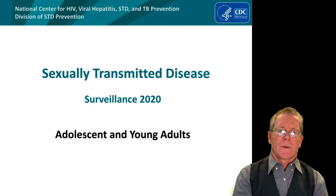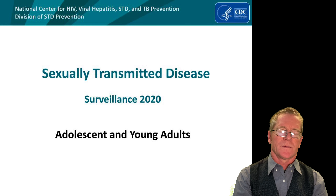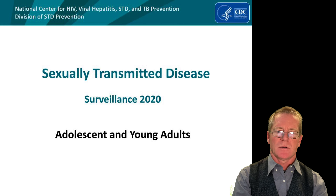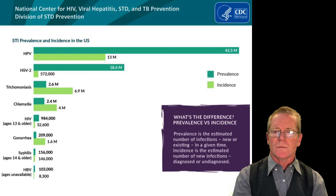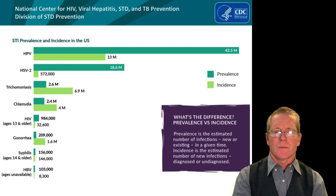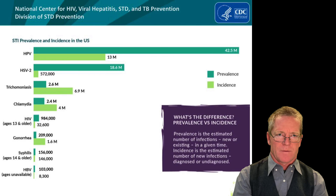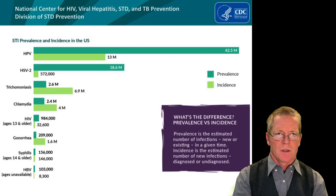Let's talk about sexually transmitted diseases. This is surveillance data from the Centers for Disease Control — 2020 data looking at adolescents and young adults. Human papillomavirus, HPV, has the highest prevalence and incidence in the United States. There is a very effective vaccine for it; in fact, getting vaccinated will prevent cervical cancer or penile cancer.